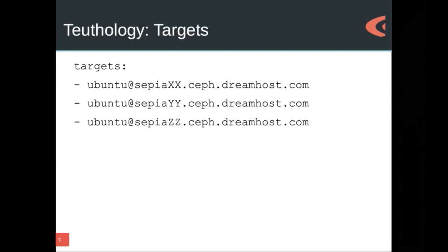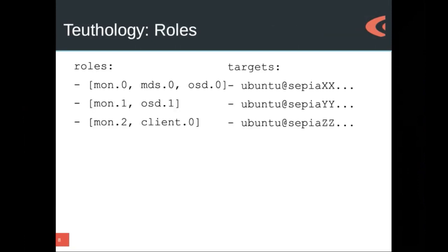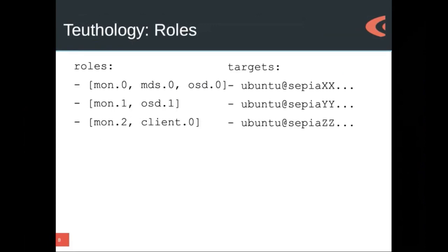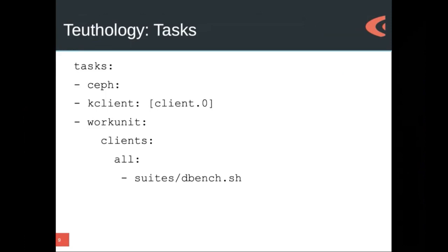Targets are literally just a list of machines. We still use the Ubuntu user because way back when this was all Ubuntu, and we had machines called Sepia located in our little Ceph section of DreamHost-incubated stuff back then — that's why these are on dreamhost.com roles. Roles just say, hey, we have three monitors and there's one on each machine. But on the first machine we want to have a monitor, an MDS, and an OSD. Those roles get assigned to the targets, and then we have a list of tasks that we want to execute that actually make up the test system.